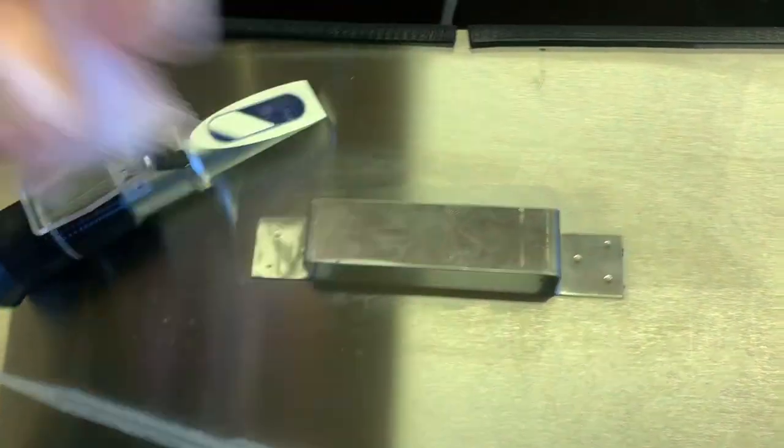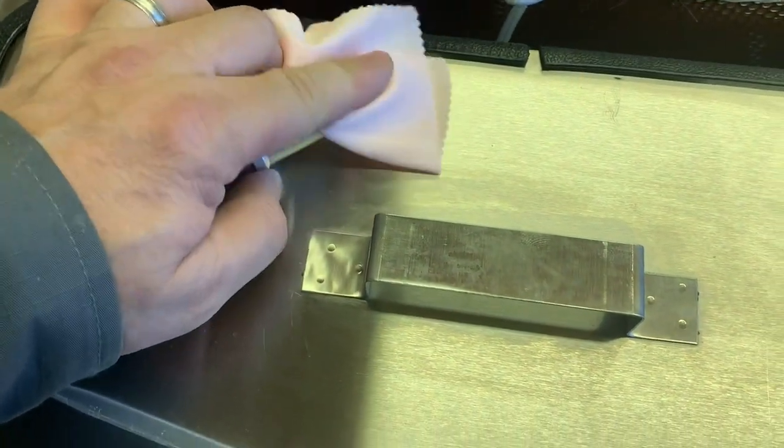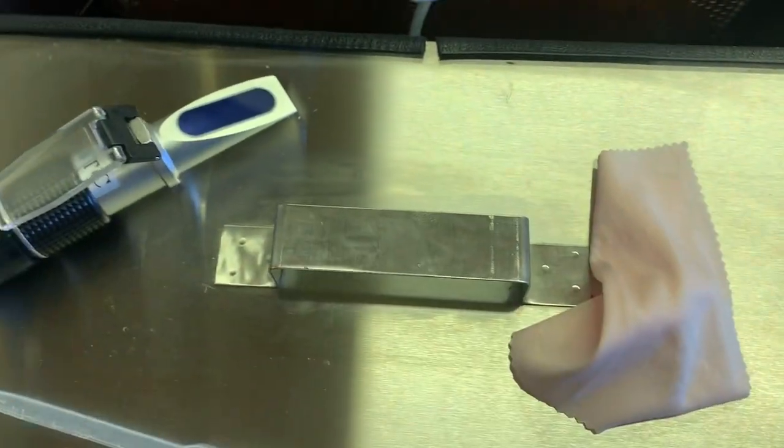The refractometer also comes with a little cloth, so you want to make sure that you clean that lens really good so there's no moisture on it to contaminate your sample.